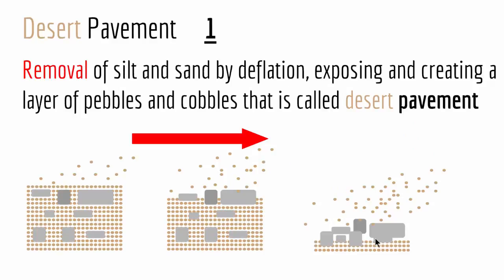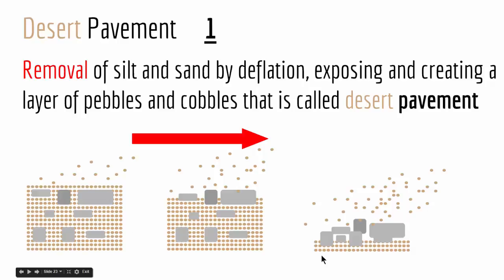Desert pavement is the removal of silt and sand by deflation, exposing and creating a layer of pebbles and cobbles — that is called desert pavement. As you can see in this illustration, when you have big and small rocks mixed with sand, when wind removes the sand you are left with the pebbles and rocks that create a pavement on the desert floor.